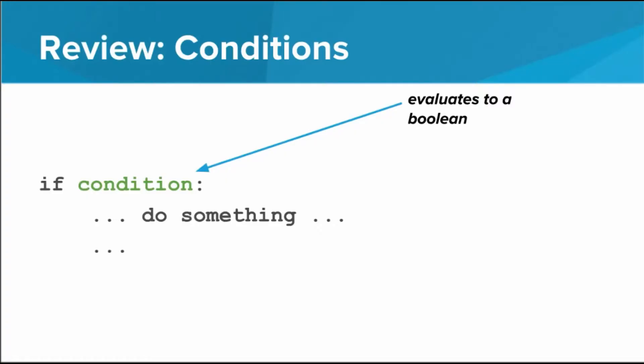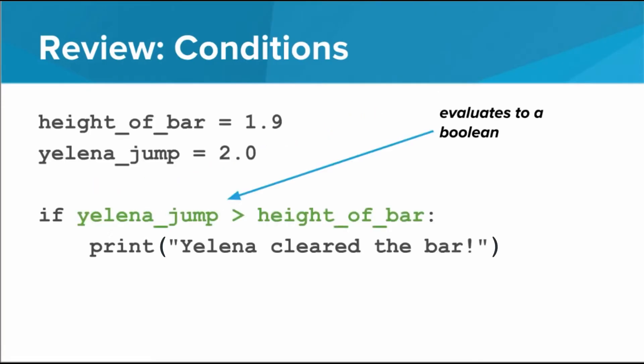In the last lesson, you learned that this part of the if statement must be something that evaluates to a Boolean. Take a look at this example. Yelena is competing in the high jump event, and we want to know if she successfully cleared the bar. First, we make two variables — one for the height of the bar in meters, and one for how high Yelena jumps in meters. We then use an if statement that uses a Boolean expression with a comparison operator. The expression is highlighted in green. In this case, the expression evaluates to true, so it looks like Yelena is still in the running. The comparison operator we used was the greater than operator. Operators like greater than can be used to compare two numbers and generate a Boolean value — true or false.